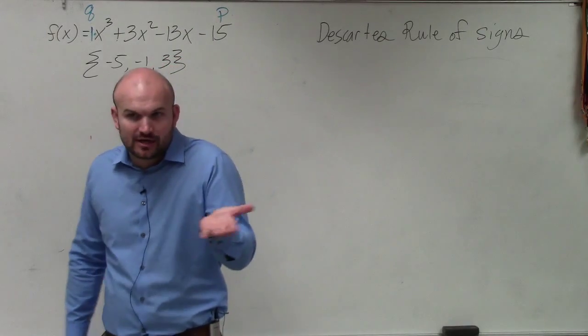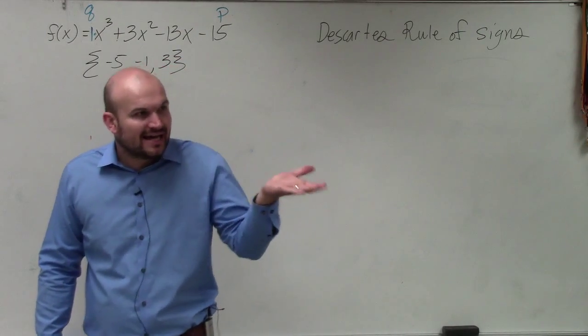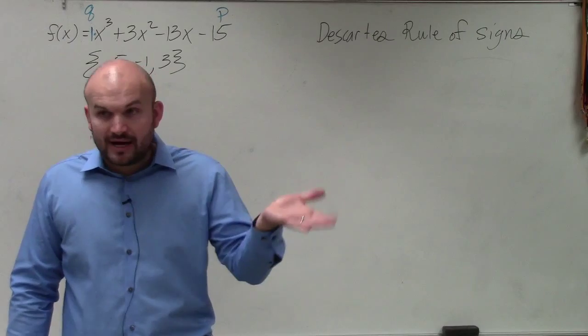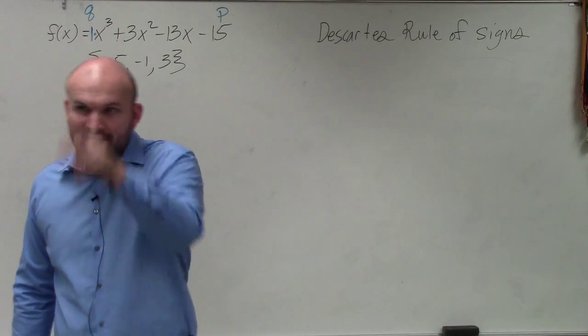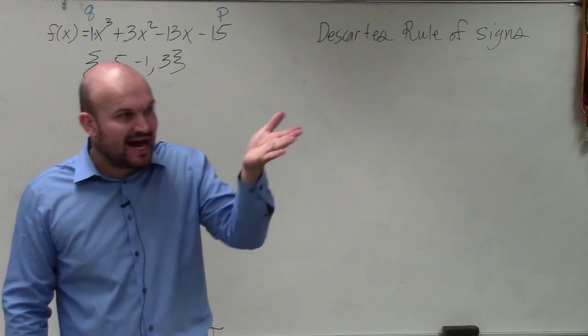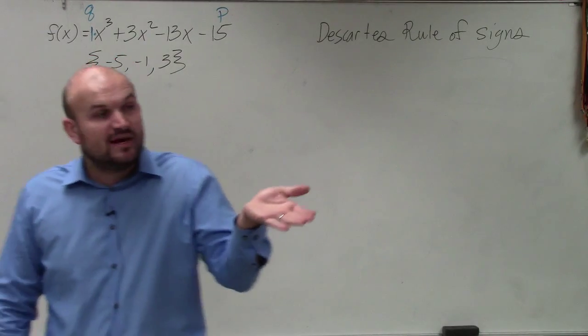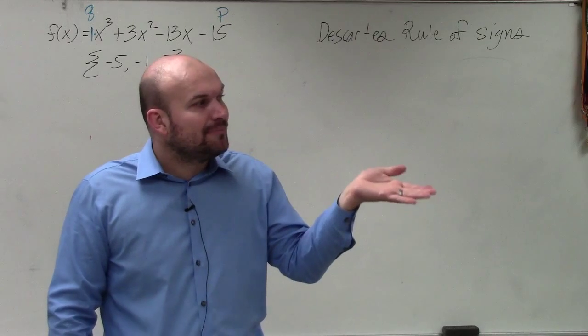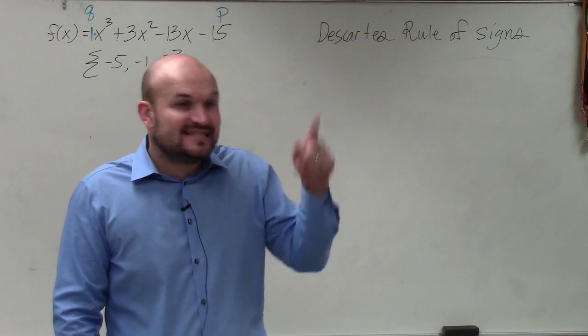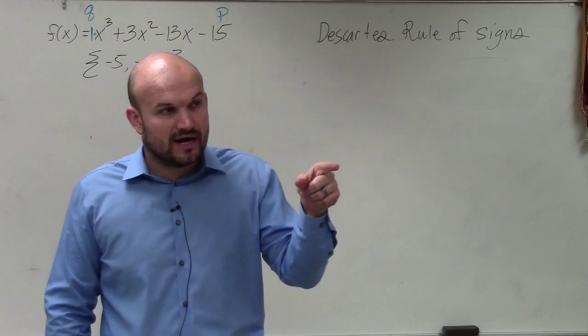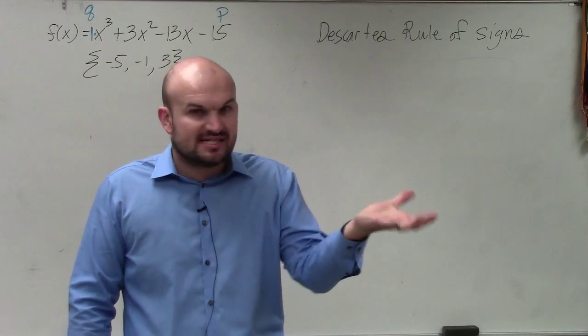Because remember, you can have solutions that are complex, right? You can have i as a solution. Remember we did that for quadratics? We had like square roots of negative numbers, which was still a solution, but it was complex. And what that meant was if it was a complex solution, it didn't cross the x-axis. Only real solutions cross the x-axis.